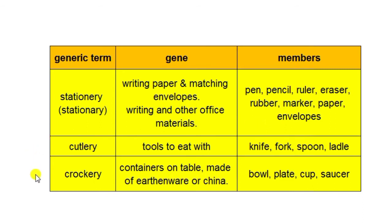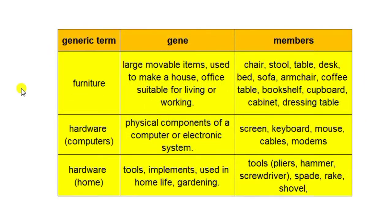Cutlery and crockery are also two very interesting families. Just to show you how genes work — we all know the word furniture, but have you ever thought about what is the gene that would make something fit into this family? We know a chair is furniture, but why? And there is also the peculiar situation where one word means two different families: hardware can have something to do with computers, and another hardware can refer to things that we use at home.